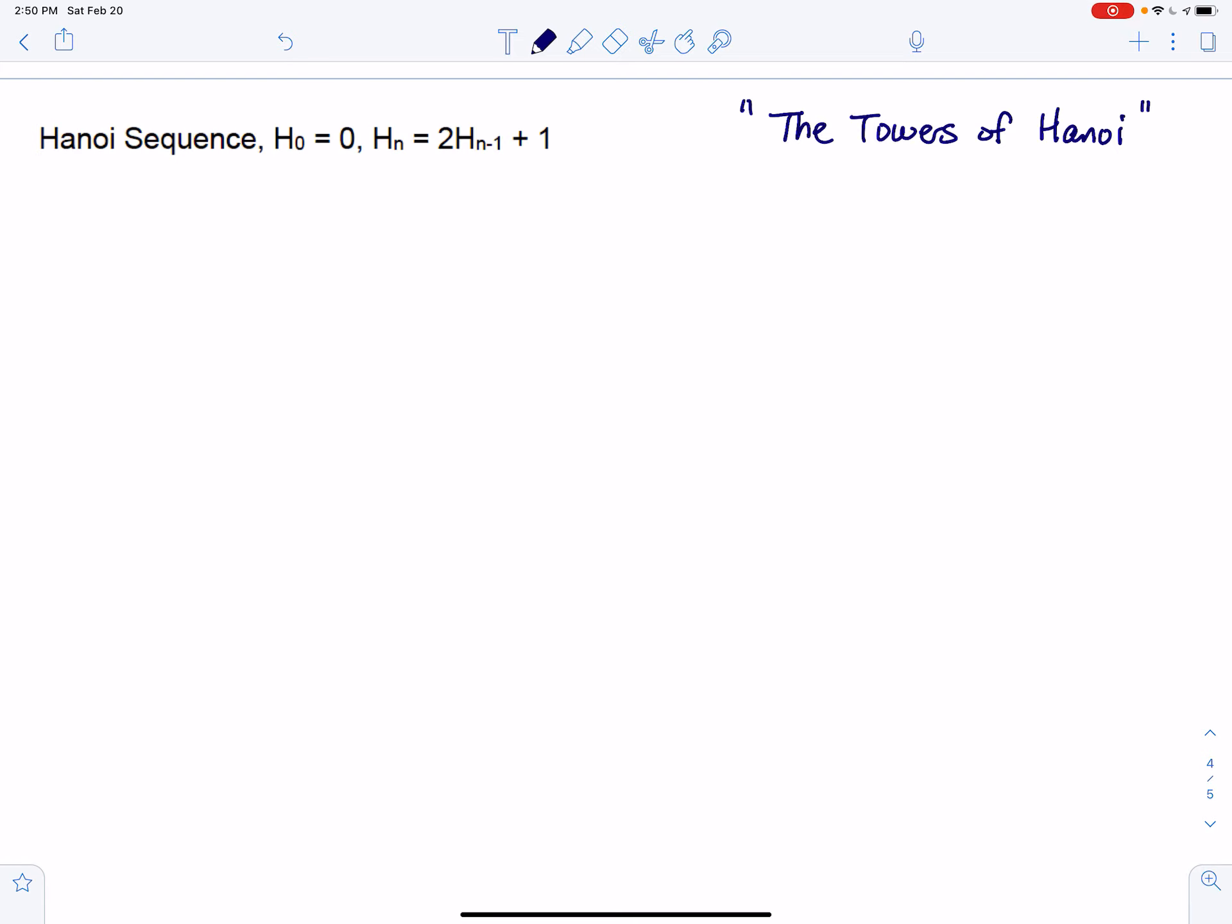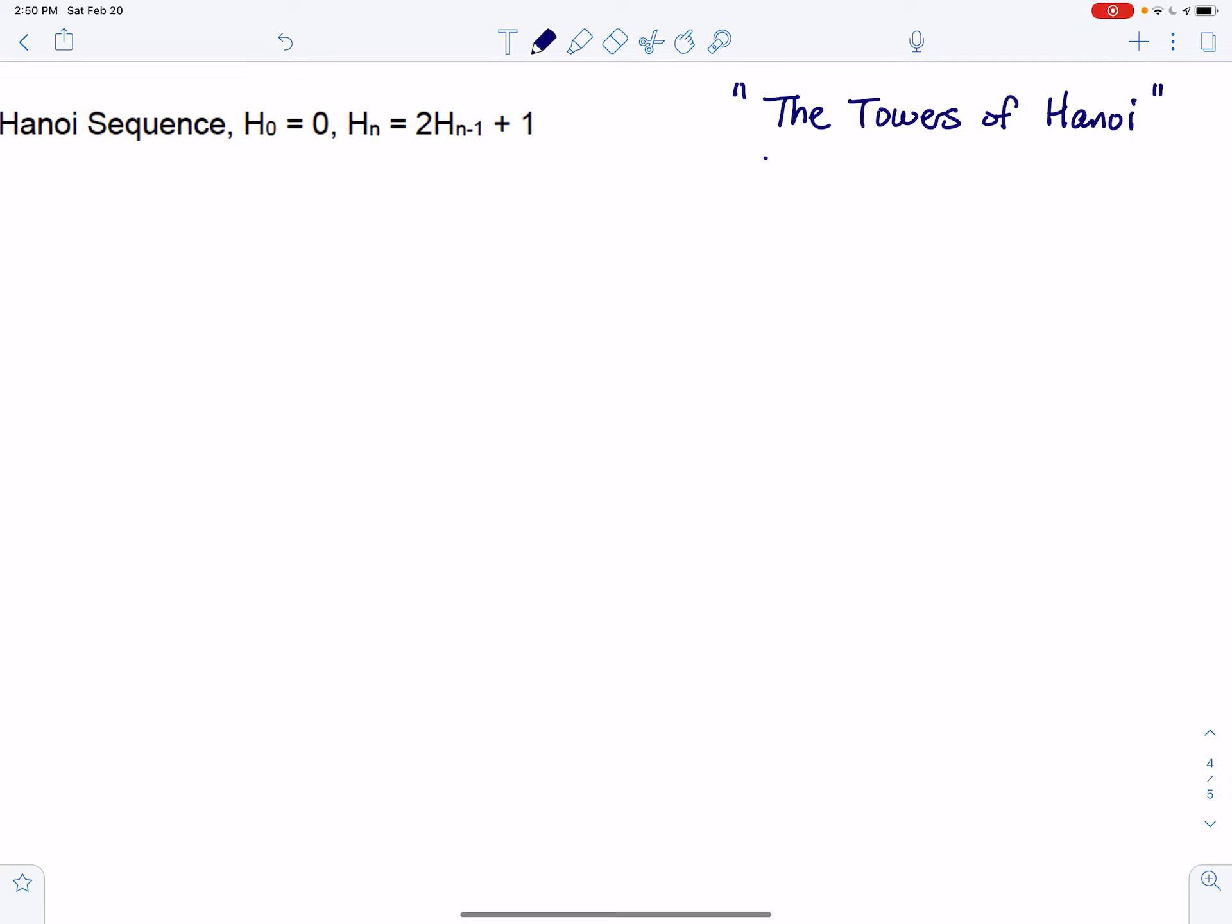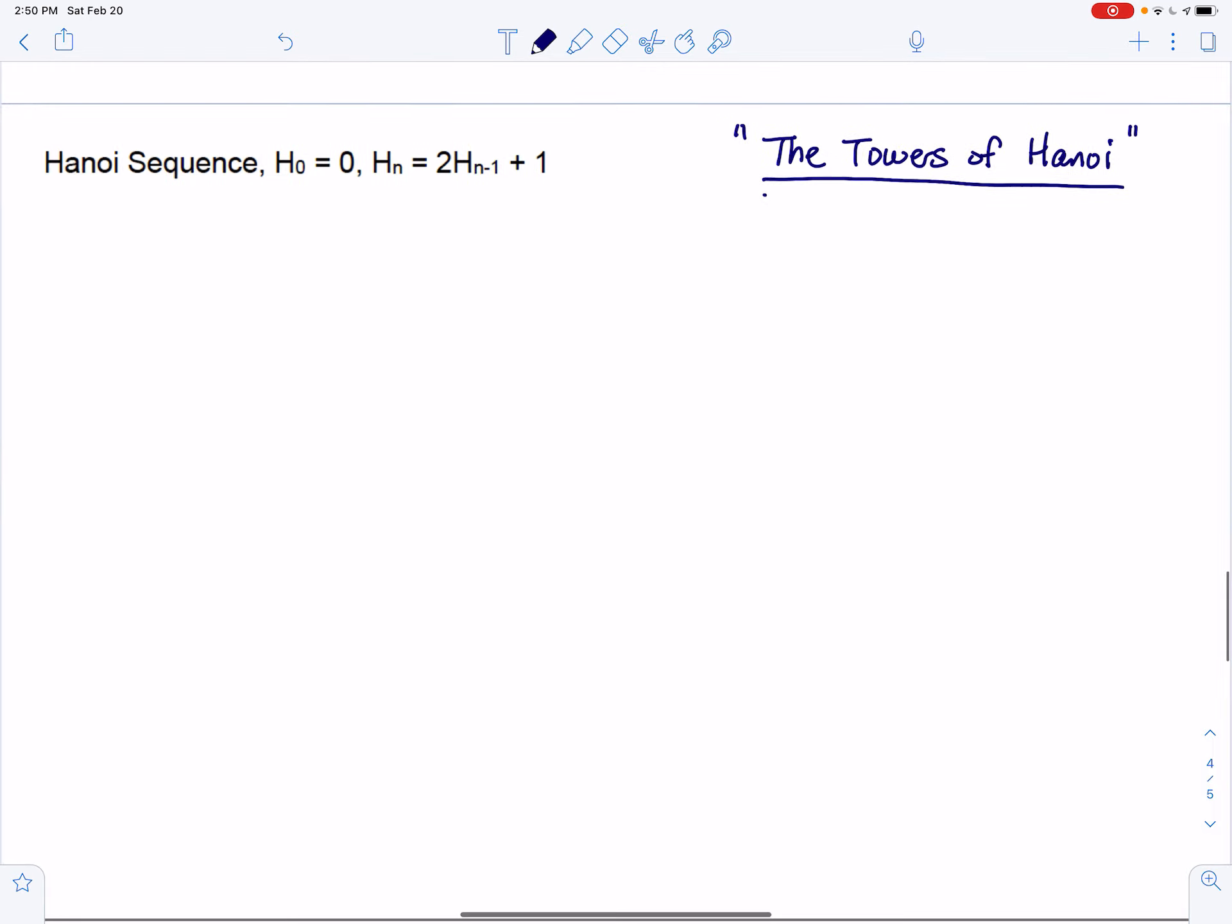Another famous sequence is the Hanoi sequence, which gets its fame from another famous math problem called the Towers of Hanoi. I do suggest that you look into that just to get some reference, because this sequence basically tells you how many movements are required to move the tower from one peg to another. Again, to get reference, just go to Google and type in the Towers of Hanoi and you'll get the whole description.